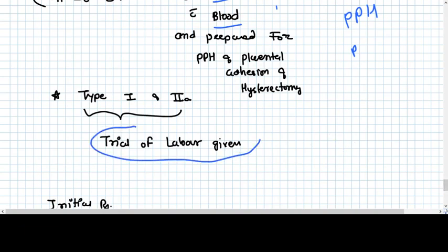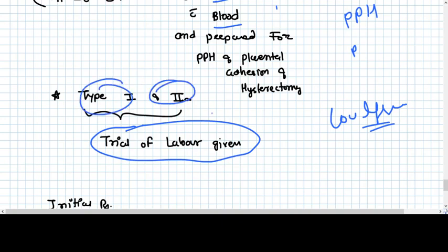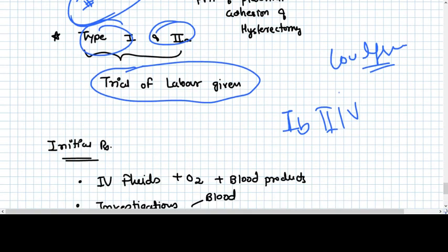Now according to the types, in some types of placenta previa, we can get a chance of trial of labor. In low-lying placentas, we can give trial of labor. Type 1A, type 2A. In both of these kinds of placenta previa, we can go for trial of labor. But if the placenta previa is of either type 2B or 3 or 4, we have no other chance other than going for cesarean section.